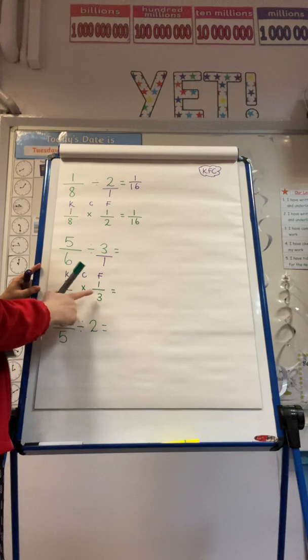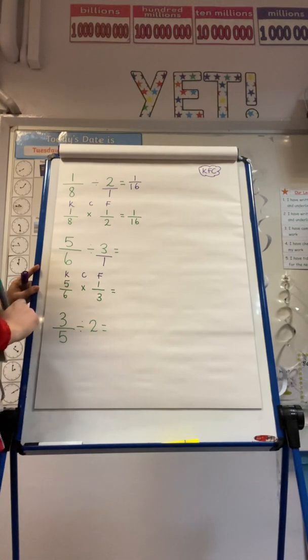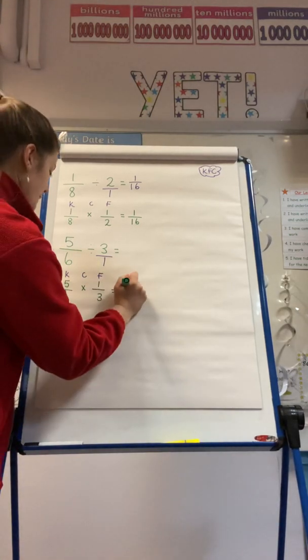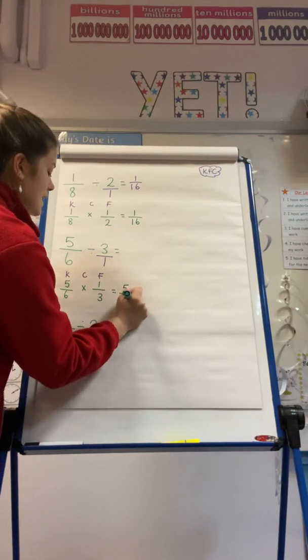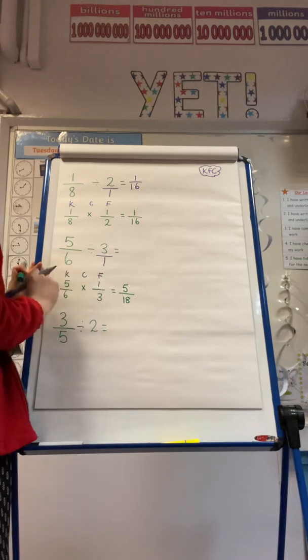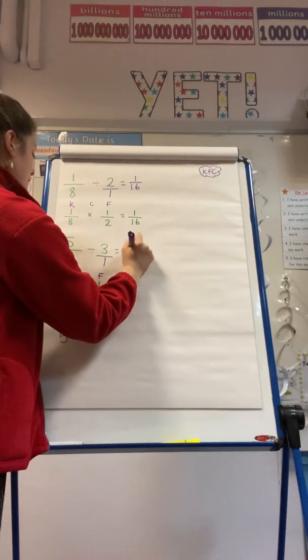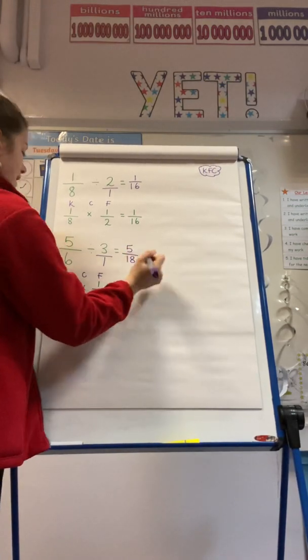So I'm now looking at 5 sixths multiplied by 1 third. 5 times 1 is 5, and 6 times 3 is 18. So we know that 5 sixths divided by 3 is 5 eighteenths.